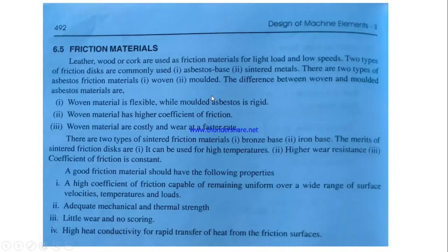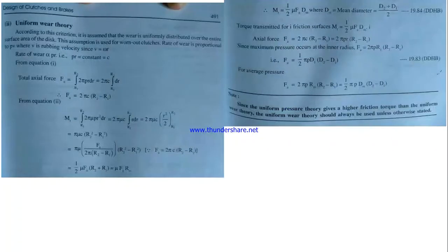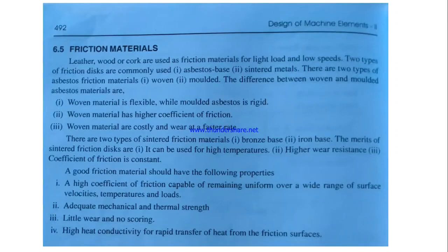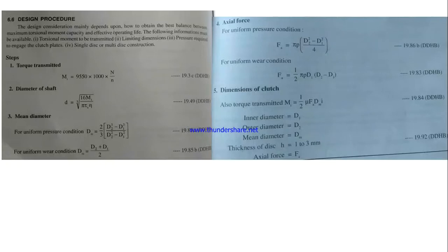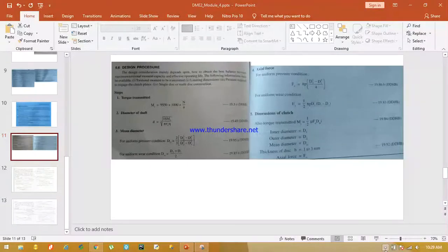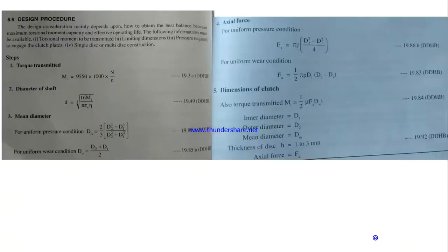Good morning students. In yesterday's class we discussed the properties of friction materials and the different types of materials used. We also discussed the derivation of uniform wear theory. Today we are going to discuss the general design procedure for friction plate clutches.